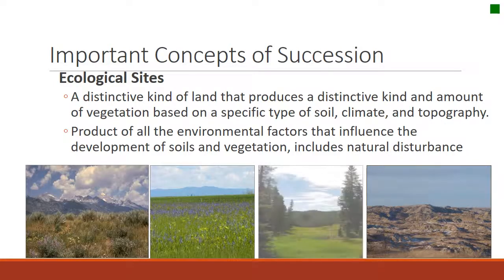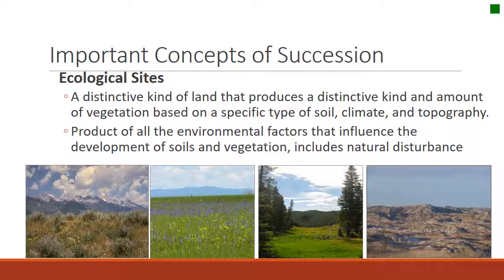An important concept in succession is the idea of an ecological site, which we'll cover a little later in this class. An ecological site is a product of all the environmental factors — such as climate, history, soil, and the bedrock that the community is laid on — and those factors influence the development of soil and vegetation. This includes natural disturbances such as fire. At any one place on Earth, there's only so many types of plants that might grow, survive, and really become a potential natural community. That one place on Earth would be called an ecological site — something with the ability to produce the same kind of soil and vegetation.